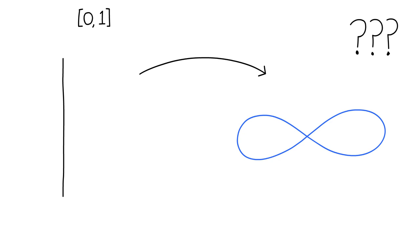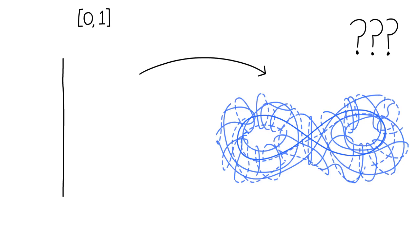You might imagine that if we knew a lot about the continuous functions of this form, we would know a lot about the mystery space. And you'd be right. This is the fundamental idea behind homology and algebraic topology as a whole. Study complicated spaces by studying the way that simple spaces map into them.